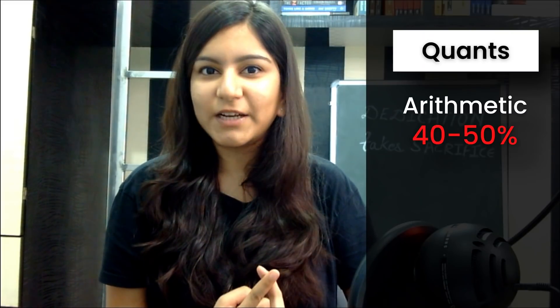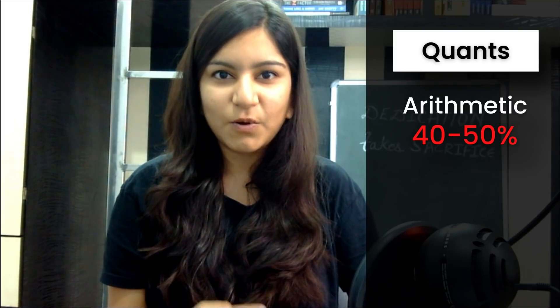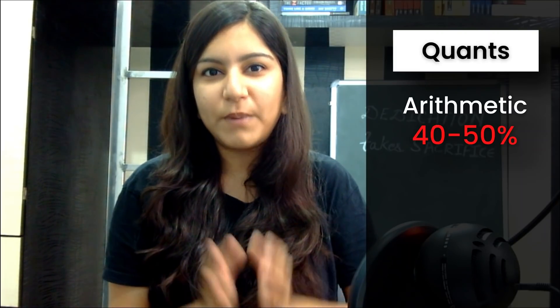In this section there are four subcategories: first is arithmetic, second algebra, third number system and geometry combined, and fourth is modern maths. Arithmetic is the section that carries the most amount of weight in the quant section. Approximately 40 to 50 percent of questions since the last many years have been from arithmetic, so this is a section you definitely cannot miss. Within arithmetic, certain chapters occur more often in the exam and also form a building block for DILR, so you can't skip them.